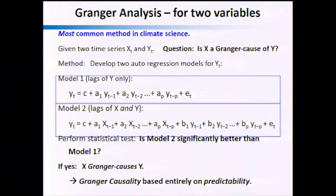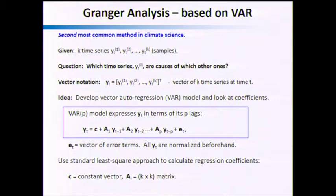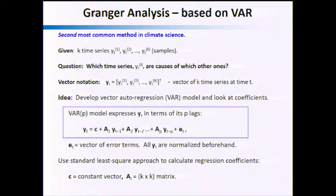Quite often you have more than two variables. It's actually relatively straightforward: you do vector autoregression. You have different time series y_t1 to y_tk, and since I don't know what's the cause and what's the effect, I toss them all into one vector. I put all the time series into one vector and develop a VAR(p) model that expresses y in terms of its p lags.